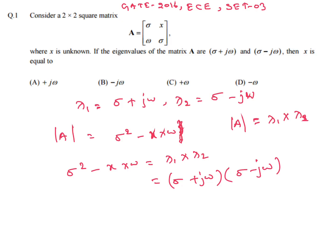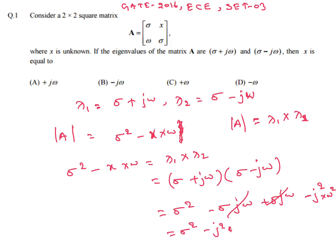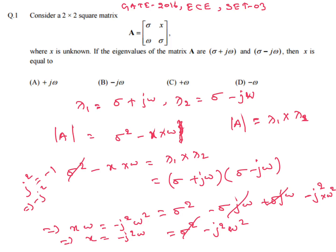Expanding (σ + jω)(σ − jω) gives σ² − j²ω². The σ² terms cancel on both sides, leaving x·ω = j²ω². Dividing by ω: x = j²ω. Since j² = −1, x = −ω. So option D is our answer.